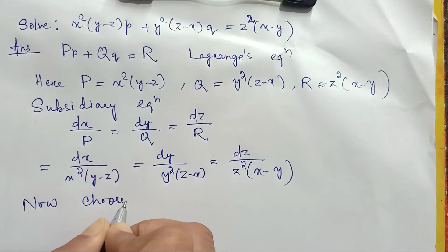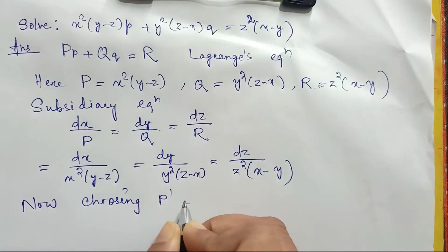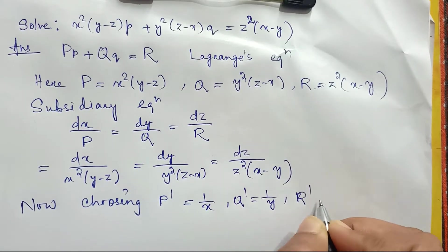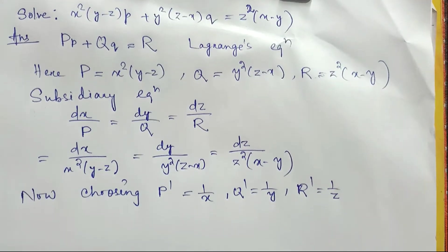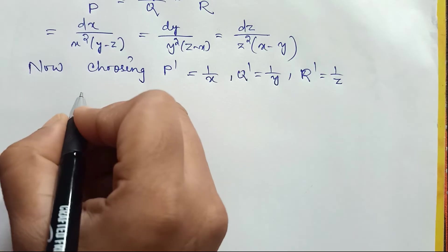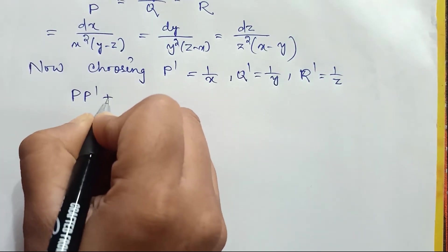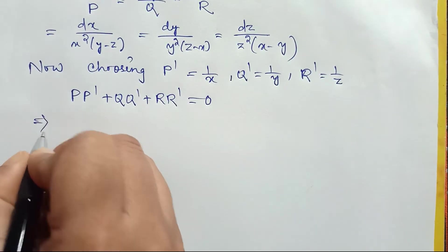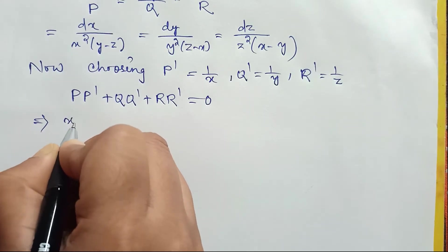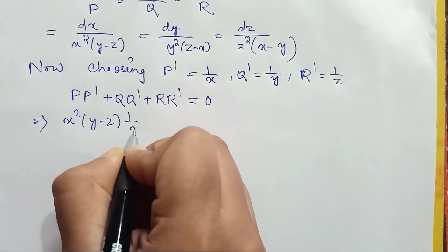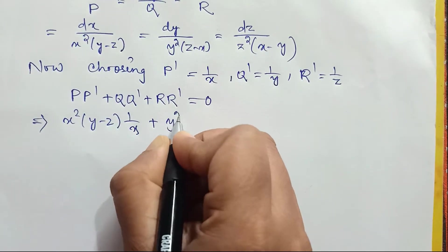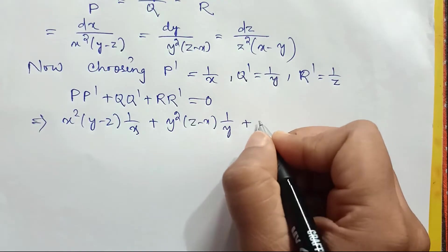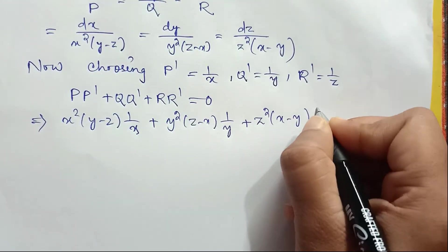Now, choosing p' = 1/x, q' = 1/y, and r' = 1/z. We choose p', q', r' in such a way that P·p' + Q·q' + R·r' becomes 0. We can verify: P is x²(y-z), p' is 1/x; Q is y²(z-x), q' is 1/y; R is z²(x-y), r' is 1/z.